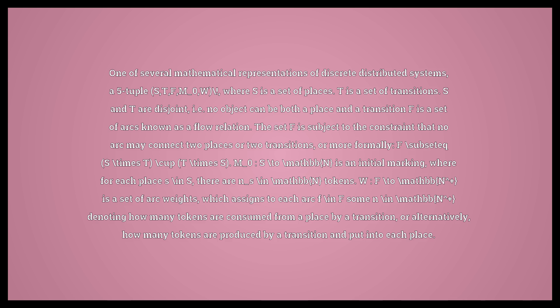a 5-tuple (S, T, F, M₀, W), where S is a set of places, T is a set of transitions. S and T are disjoint, i.e., no object can be both a place and a transition. F is a set of arcs known as a flow relation.